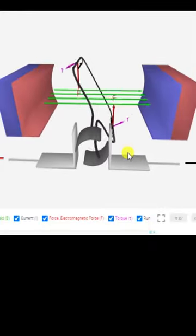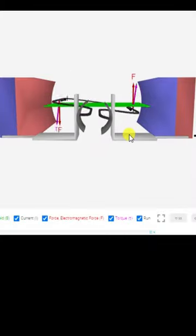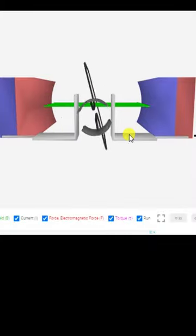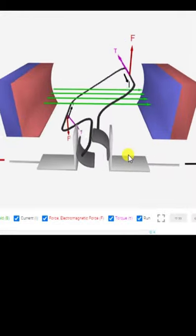But it is these split rings that enable the coil to rotate in one direction because they reverse the direction of the current flow through the coil after every half a cycle.